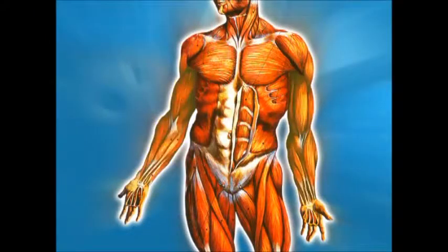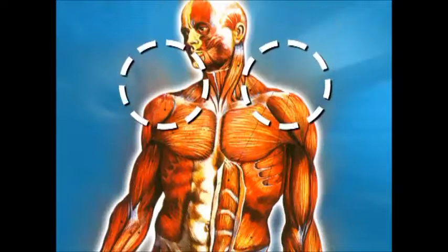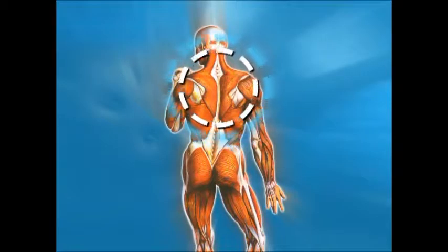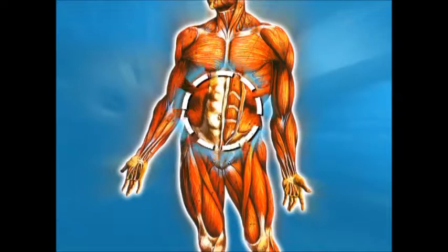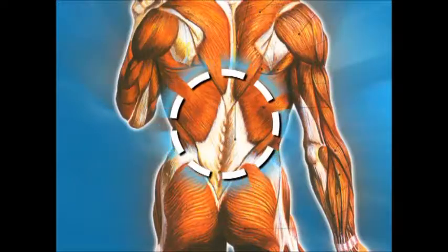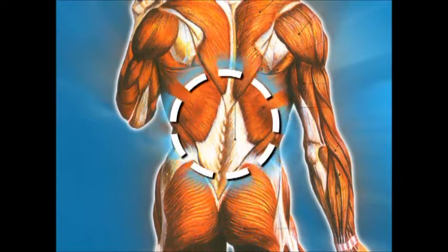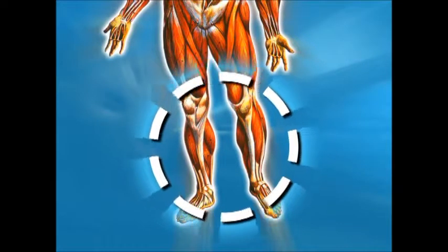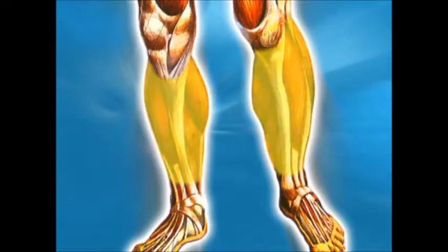So why not take the muscles in groups? For example, upper body, middle body, or lower body. Upper body comprises the muscles of the arms, shoulders, chest, and upper back. Middle body would comprise the abdomen and back. Lower body would comprise the thighs and the calf.